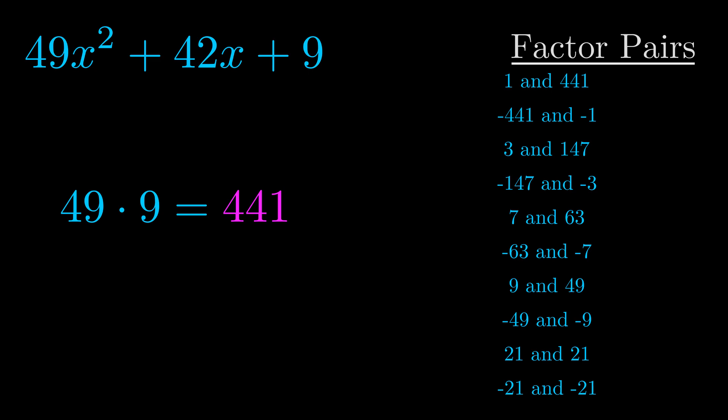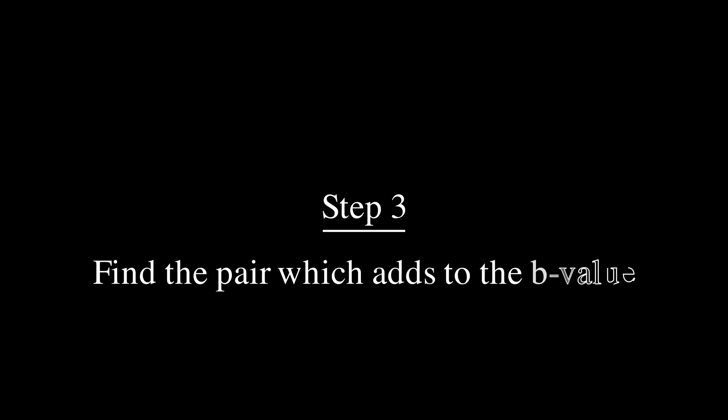Now once you have these factor pairs, the goal is to find which of these pairs adds to the b value. The b value is the coefficient on the x term.